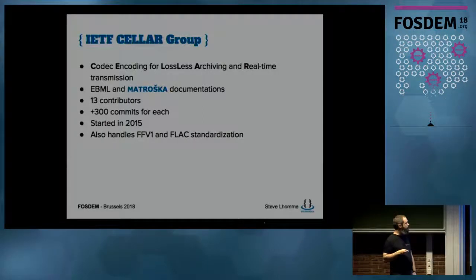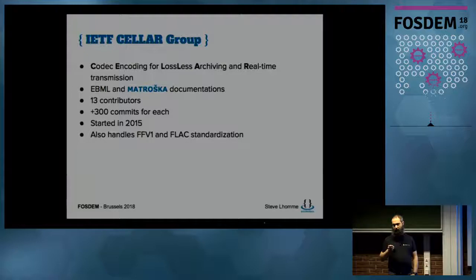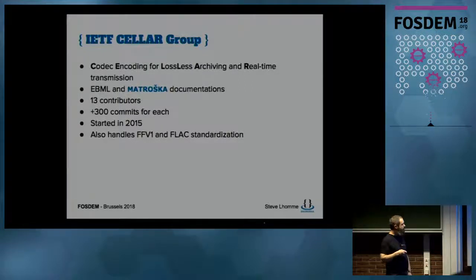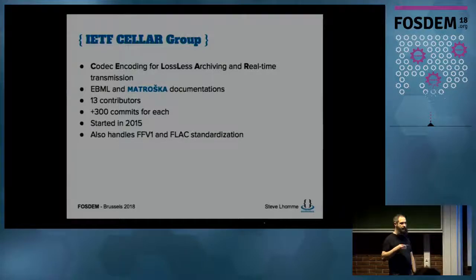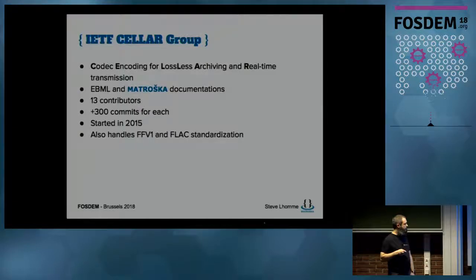The working group is working on EBML — the binary XML that Matroska uses — and on Matroska itself, which is now split into three different documents. Each project has about 13 contributors and 300 commits, mostly on documentation. The working group started in 2015 and is still ongoing, with some work remaining before we have final RFCs. The group is also working on standardizing FFV1, a lossless video format.